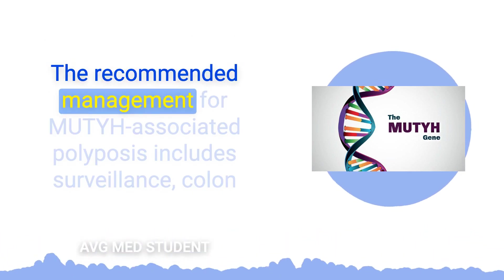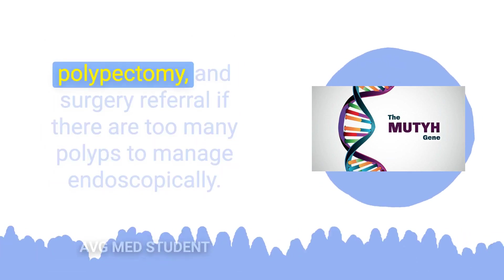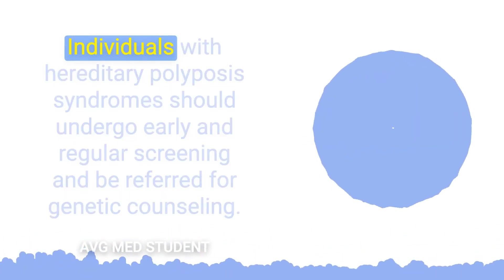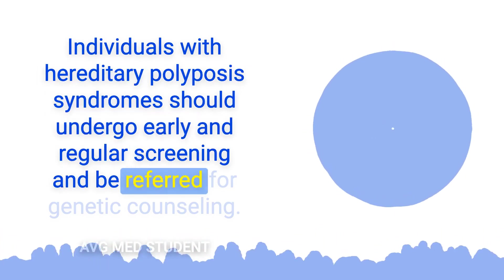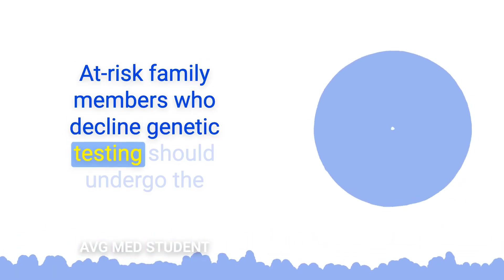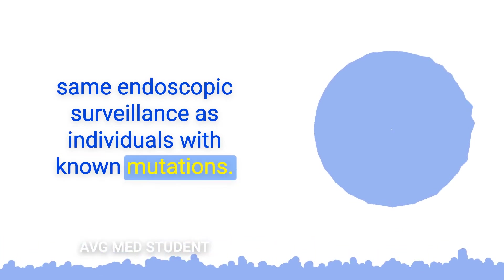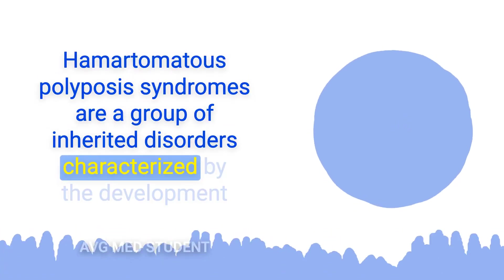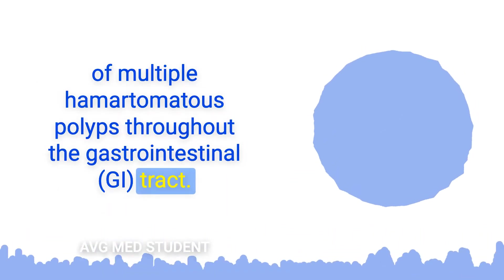The recommended management for MUTYH-associated polyposis includes surveillance, colon polypectomy, and surgery referral if there are too many polyps to manage endoscopically. Individuals with hereditary polyposis syndrome should undergo early and regular screening and be referred for genetic counseling. At-risk family members who decline genetic testing should undergo the same endoscopic surveillance as individuals with known mutations. Hamartomatous polyposis syndromes are a group of inherited disorders characterized by the development of multiple hamartomatous polyps throughout the gastrointestinal tract.